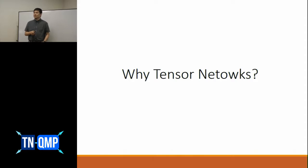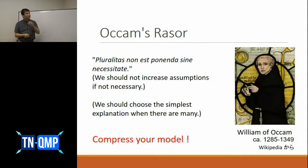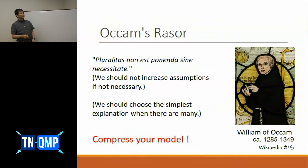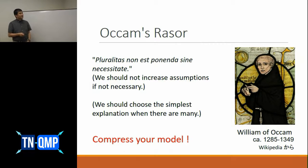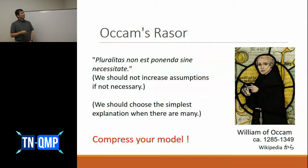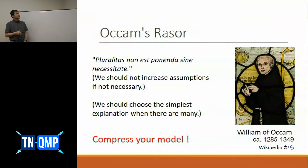Why do we have to bother about tensor networks? Since this is a very introductory talk, let me start from something a little bit far from the technical. This is William of Ockham, known for many things, but among them he's famous for Occam's razor. Basically, the statement is: we should not increase assumptions if not necessary. We should choose the simplest explanation when there are many possible explanations. A shorter version of that is the compression model.